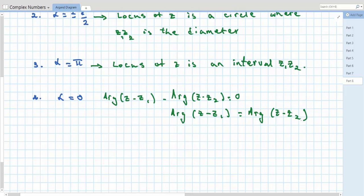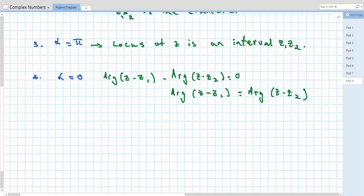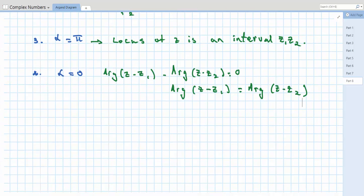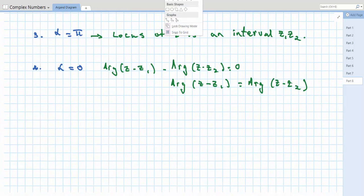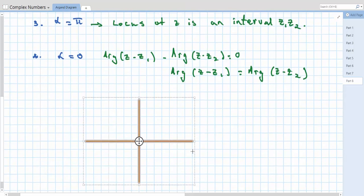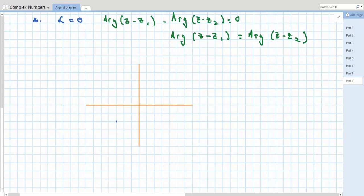So the angles of those two must be the same. So let's draw a set of axes. Pick at z1 and pick at z2.